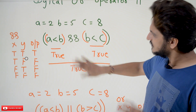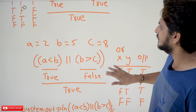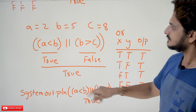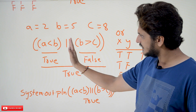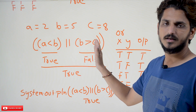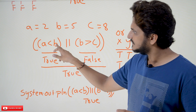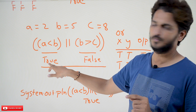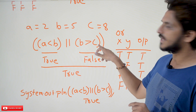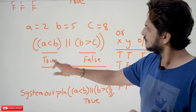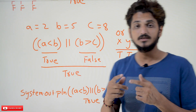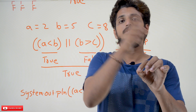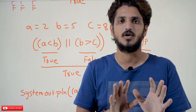Similarly, let's look at the OR operator. A is equal to 2, B is equal to 5, C is equal to 8. The statement is: A less than B OR B greater than C. A less than B — 2 less than 5 — gives true. B greater than C — 5 greater than 8 — gives false. True OR false: OR means if any one of the conditions is showing true, then the entire condition is true; otherwise it is false.